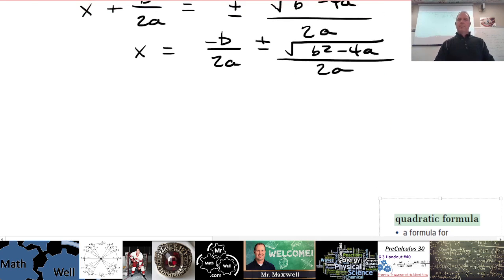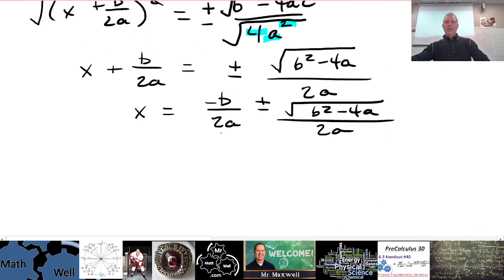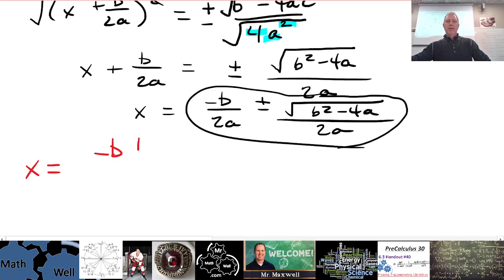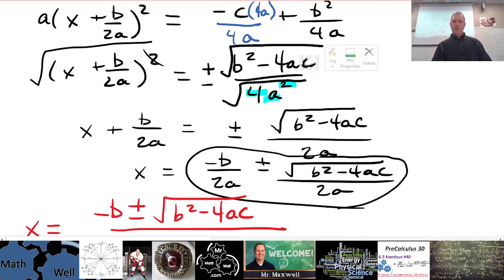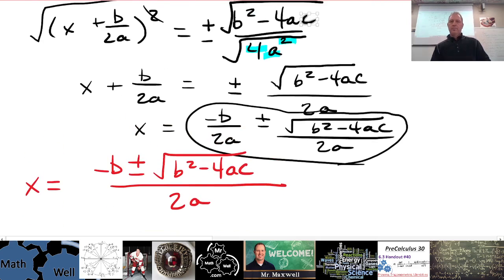The last final step here is now to just combine these terms because they have a common denominator. I'll write this in red over here now. x equals negative b plus or minus the square root of b squared minus 4ac. This should be c over here, 4ac, all over 2a.